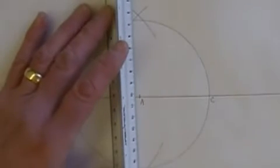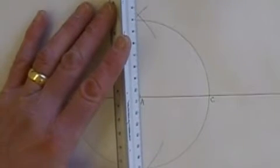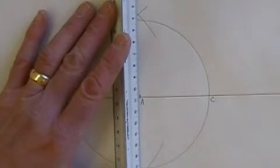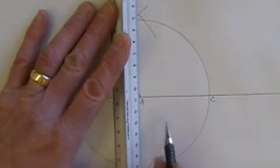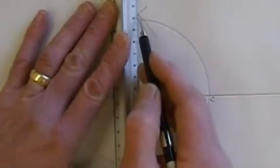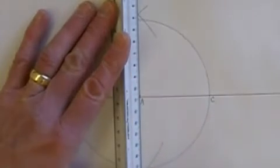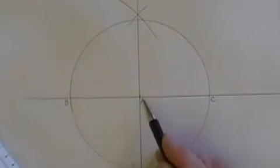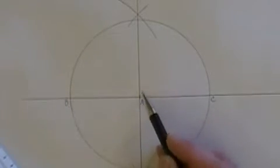Take your straight edge, and where those arcs intersect, we'll draw a straight line through point A. That forms a perpendicular.